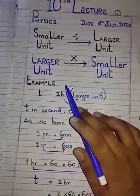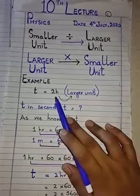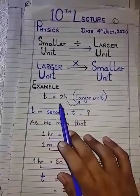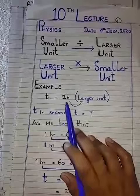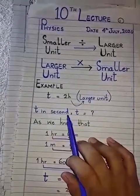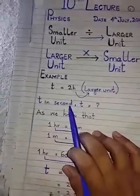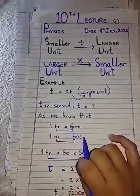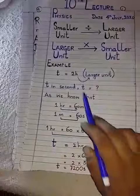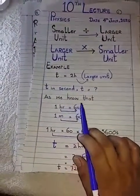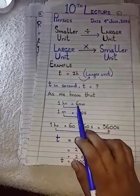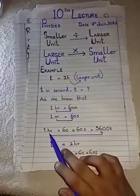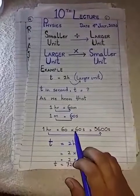Suppose the time period of an object is given in a larger unit — for example, time equals 2 hours — and the question is to convert this into seconds. Hour is a larger unit and second is a smaller unit. We know that 1 hour equals 60 minutes and 1 minute equals 60 seconds, so 1 hour equals 60 multiplied by 60 seconds.